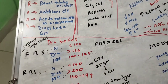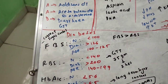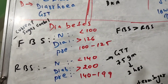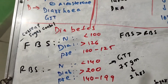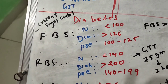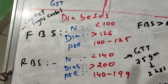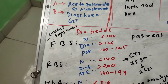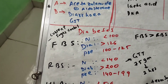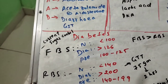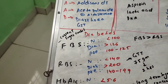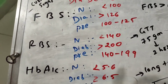Next, a very important topic: Diabetes. Type 1 diabetes happens due to complete destruction of the beta cells, so in Type 1 you have to give insulin. Type 2 diabetes is due to insulin resistance — the beta cells are still producing insulin but there is resistance to it.